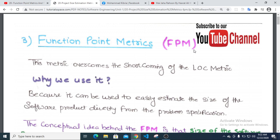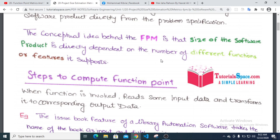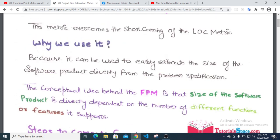This matrix overcomes the shortcomings of the LOC matrix. The shortcoming of the LOC matrix is that it overcomes size estimation issues. The actual idea behind the FPM is that the size of the software is strictly dependent on the number of different functional features.